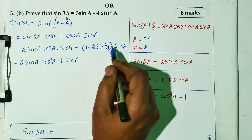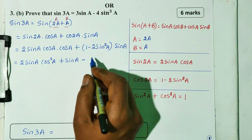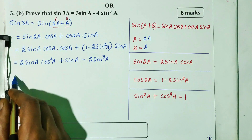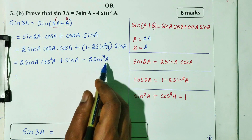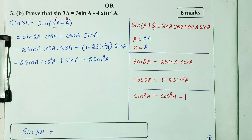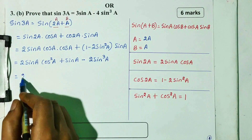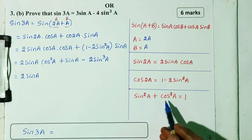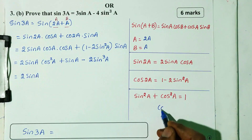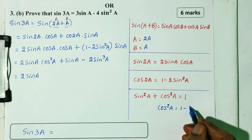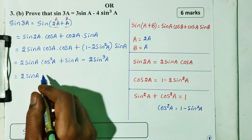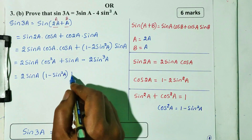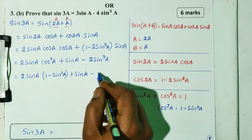Next step: write 2 sin A into 2 sin squared A. Plus into minus minus: 2 sin squared A into sin A gives 2 sin cube A. Next, using the basic identity sin squared plus cos squared equals 1, so cos squared A equals 1 minus sin squared A. We get 2 sin A into 1 minus sin squared A, plus sin A minus 2 sin cubed A.